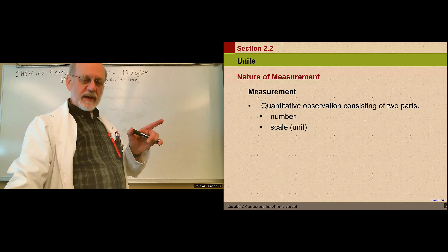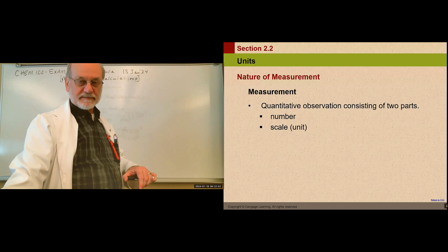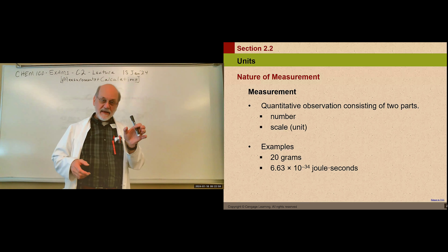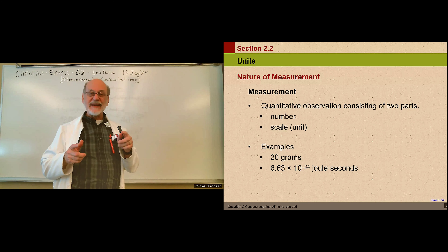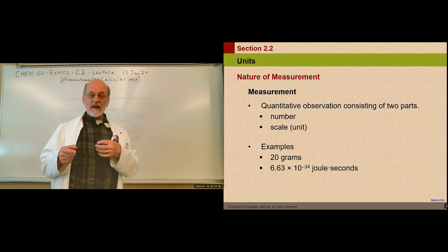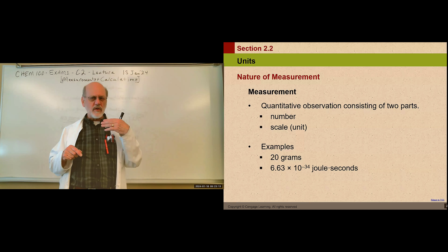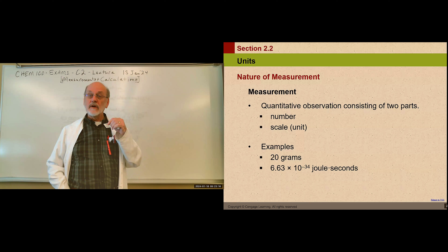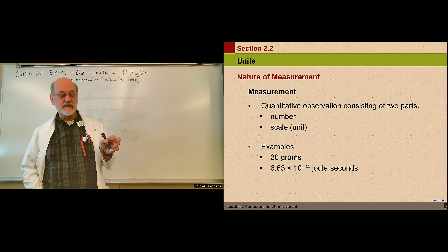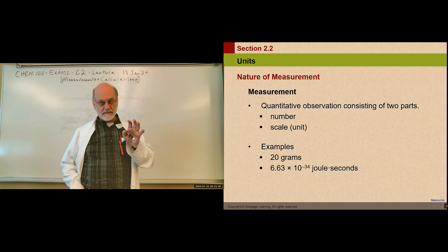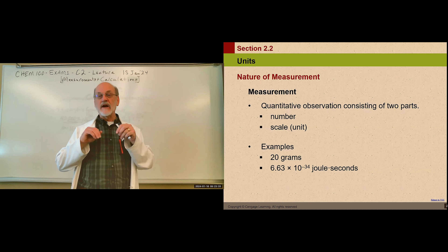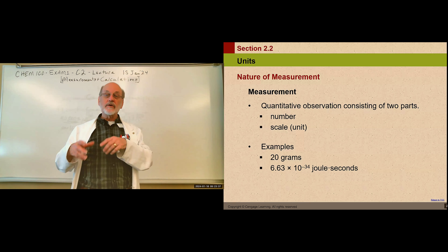A measurement has two parts: a number and a unit. Here are two examples. 20 grams — if we say grams, we know immediately we're talking about mass. But we need to understand what a gram is; we need a standard. If you don't have intuition about it, eventually you have to settle on agreed-upon facts shared among all scientists so that when we talk to each other, we understand what we mean. When I say 20 grams to another scientist, they know exactly what I mean.